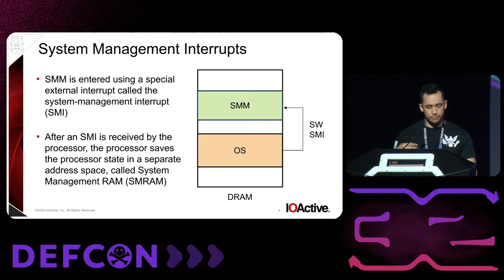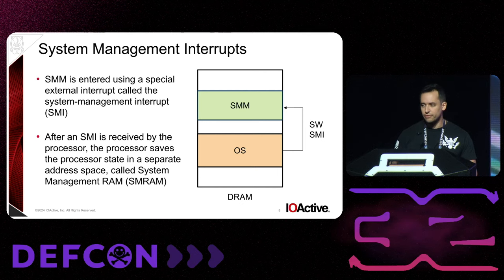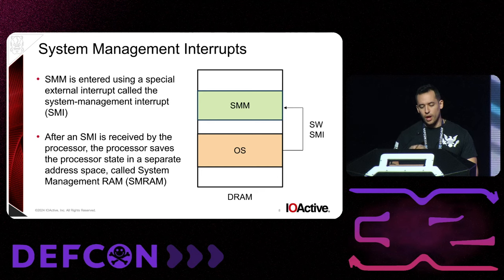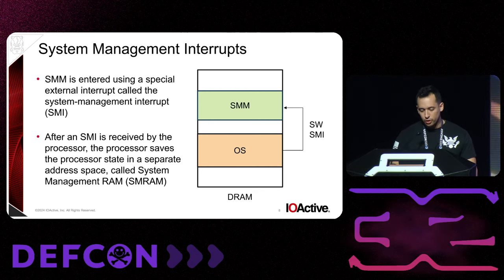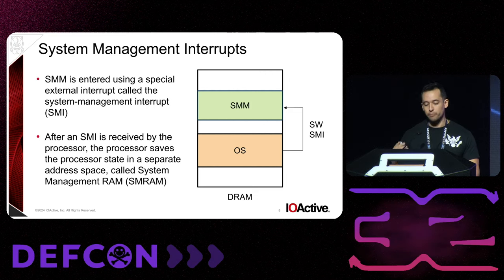So how does that happen? There's this concept of system management interrupt. When an SMI occurs, the processor gets interrupted, and the current register set of the processor is saved into the SMRAM into a safe area. Then whatever needs to happen happens — some good feature for the system — and it then comes back to the OS. In this case, we are doing a synchronous SMI, like a software SMI, where the OS is invoking a service from SMM.